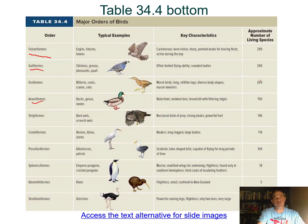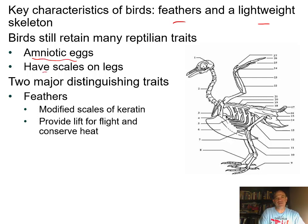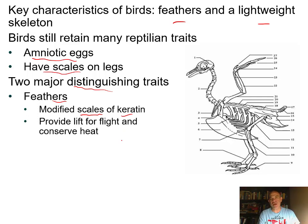Key features for birds: they evolved feathers, made of the same protein as scales on a lizard—keratin, same as your hair. They also have a lightweight skeleton. Birds retain reptilian traits—amniotic eggs and scales still visible on their legs—but what distinguishes them is modified scales called feathers, used for flight and insulation to conserve heat. The skeleton shows a breastbone with a very large keel or ridge for attachment of powerful breast muscles that connect to the humerus to pull down during flight. Their bones are hollow, making them lighter—an adaptation for flight.